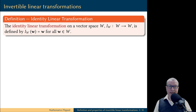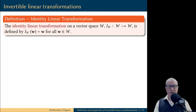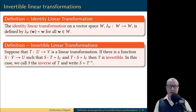First, the identity linear transformation on a vector space W is a linear transformation that goes from the vector space to itself, and it is defined as the identity function. Please do a quick check that this function is indeed a linear transformation. And now we will say that a linear transformation is invertible if it is invertible as a function.